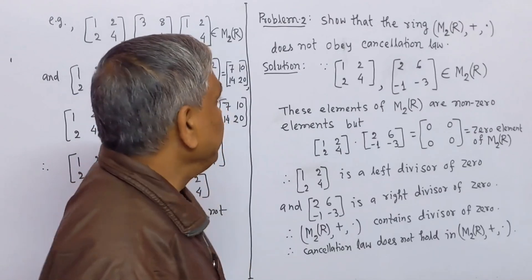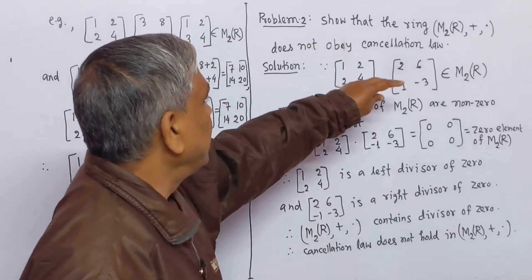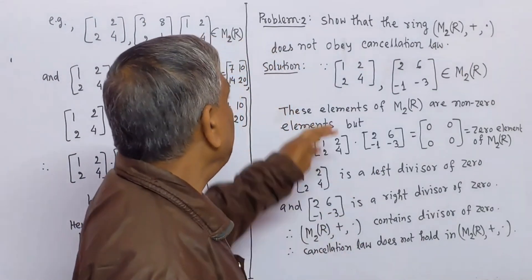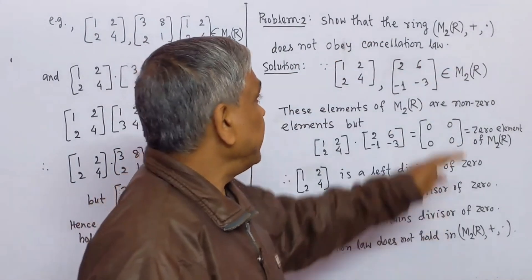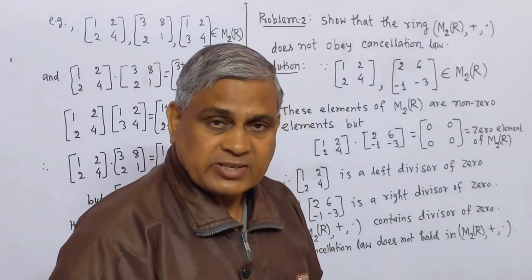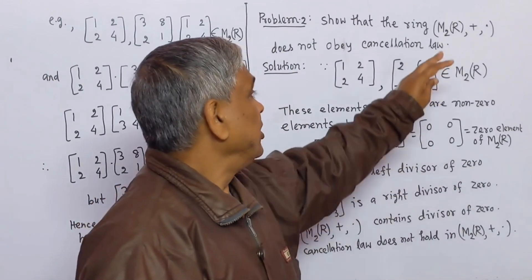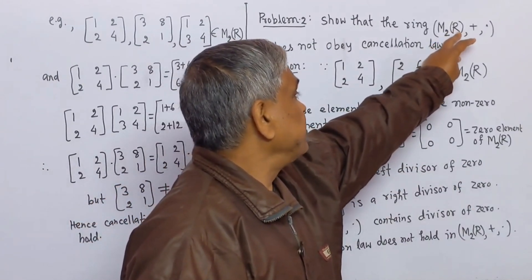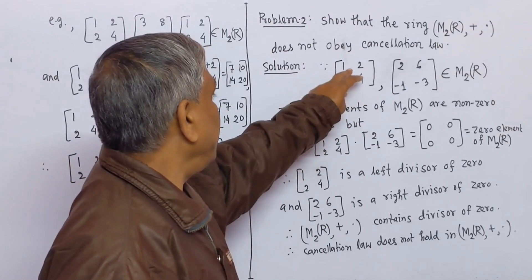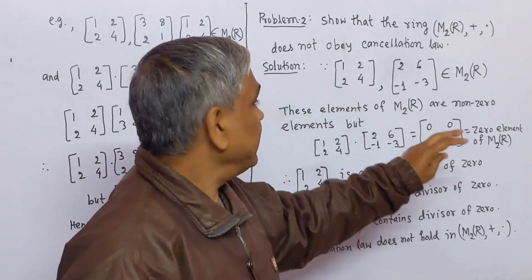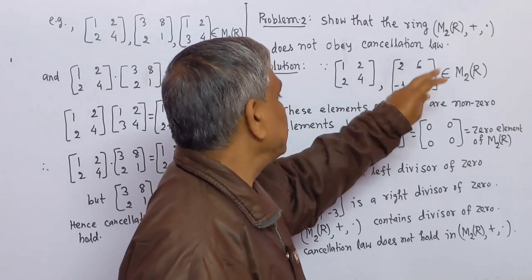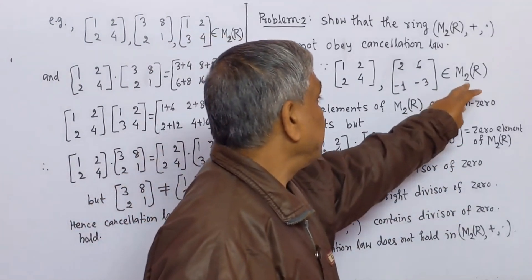Now we solve the next problem. The problem is to show that the ring M2R with binary compositions addition and multiplication does not obey the cancellation law. Here M2R is the collection of all 2-by-2 matrices where each entry of the matrices is a real number.